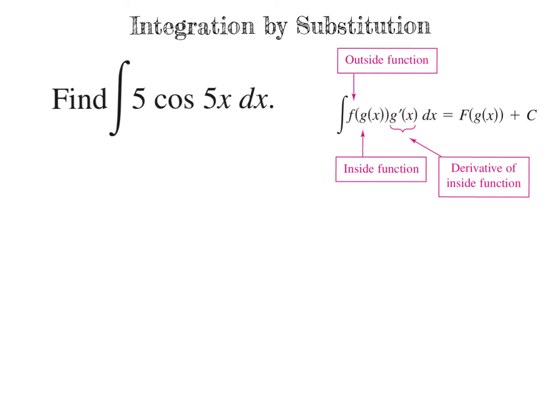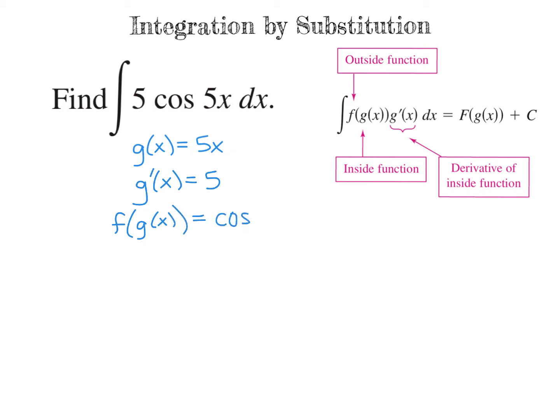In this next example, we again see that we have a composite function. We have a 5 out front, but we do have a cosine of something, and that inside function is 5x. The outside function is cosine of something. So our outside function f is cosine, and our inside function g of x is 5x. We also know g of x is 5x because g prime would just be 5, and we also have that right here. So f of g of x, where g of x is 5x, is the cosine of 5x.